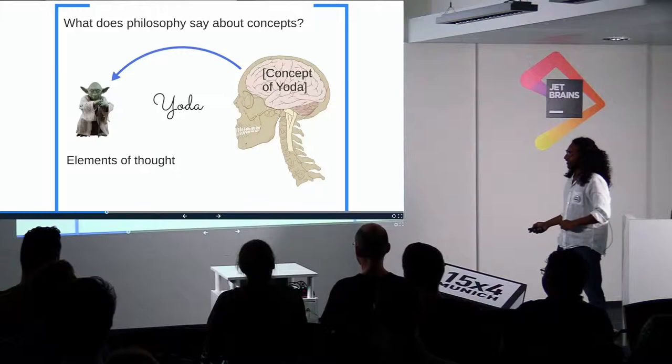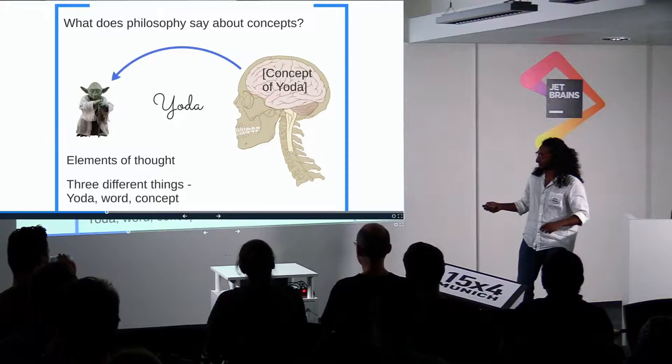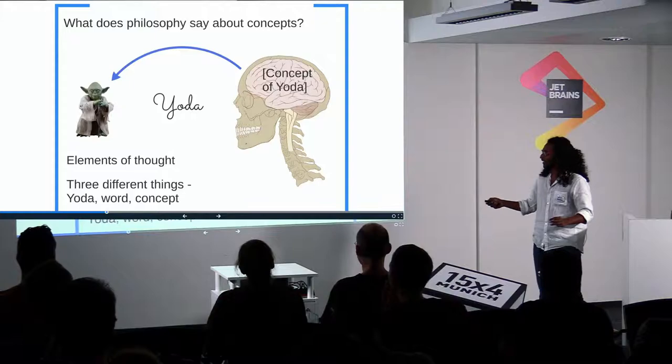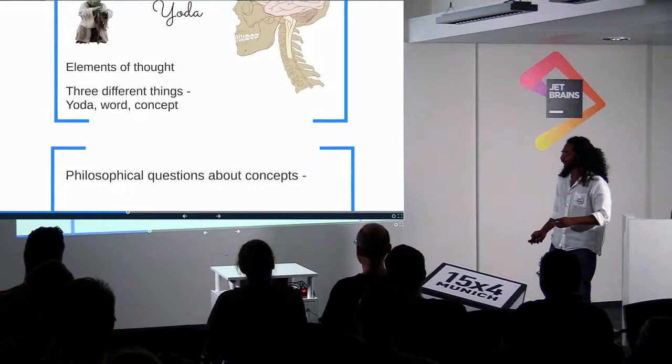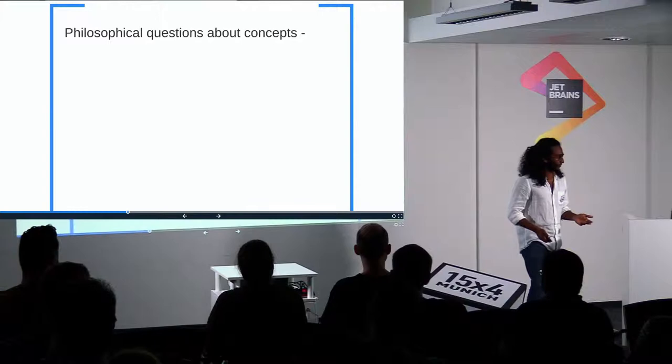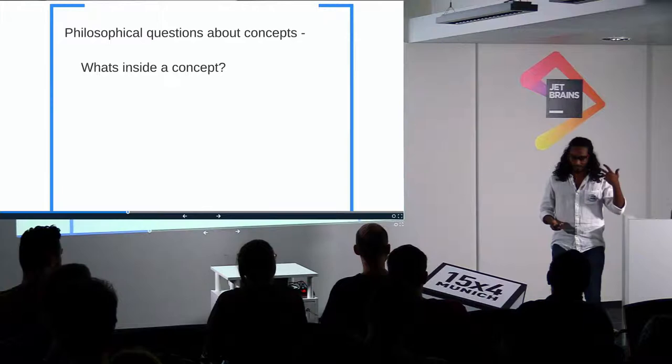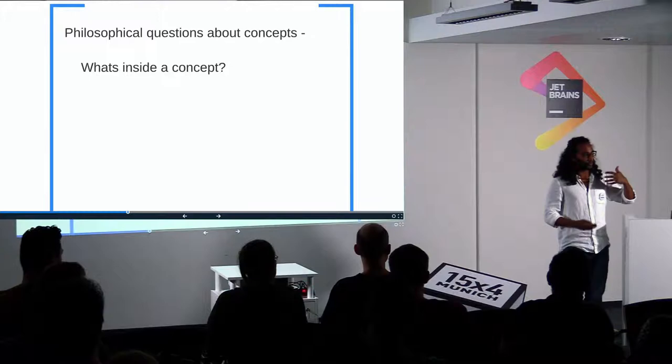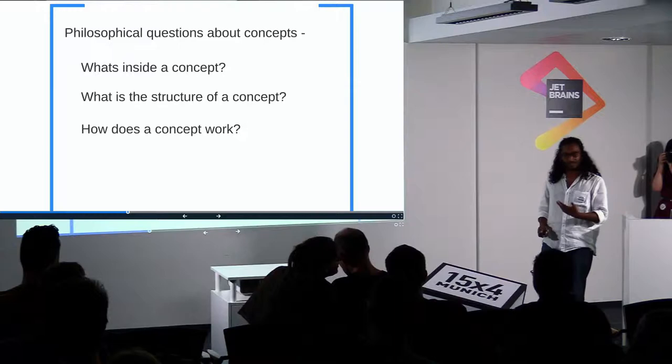Now we define concepts as the elements of thought in philosophy. So just to make it clear, there are three different things here. One is the representation of the thing in the world and there is the concept in our mind, and there is the thing in the world. So, what are some of the philosophical questions that we have fun asking when we talk about concepts? Some of them include what is inside a concept. If the concept is a representation of this thing, if I split that concept open, what do I expect to find inside it? And what is the structure of the concept and how does the concept work?